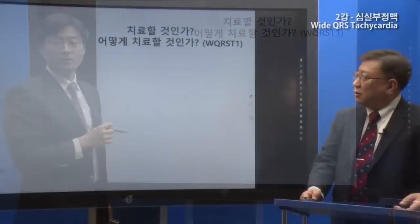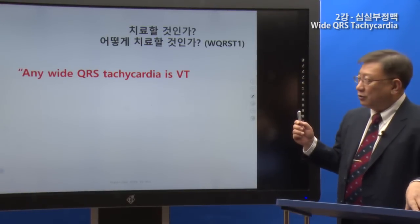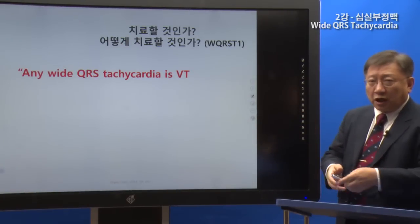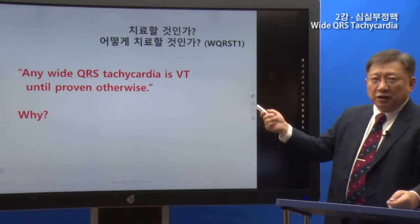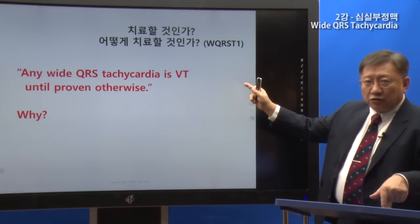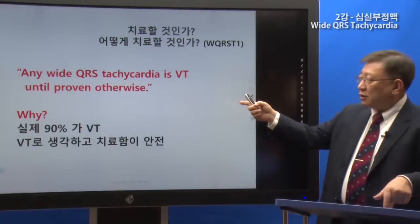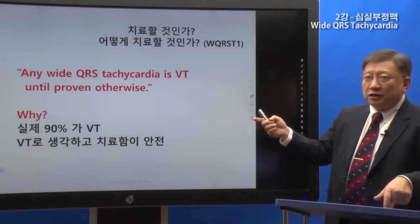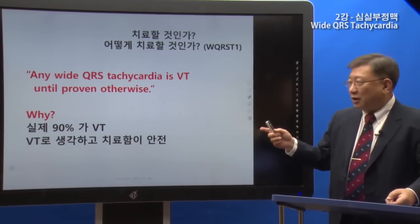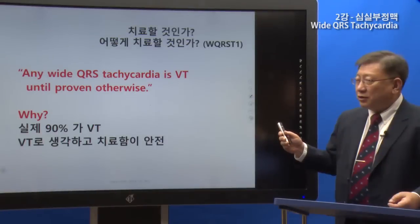One very important rule to remember: any wide QRS tachycardia should be treated as VT. About 90% of wide QRS tachycardias are VT. Even if the remaining 10% turns out to be SVT, it is safer to treat it as VT. Therefore, treat with synchronized DC cardioversion and approach it as VT.